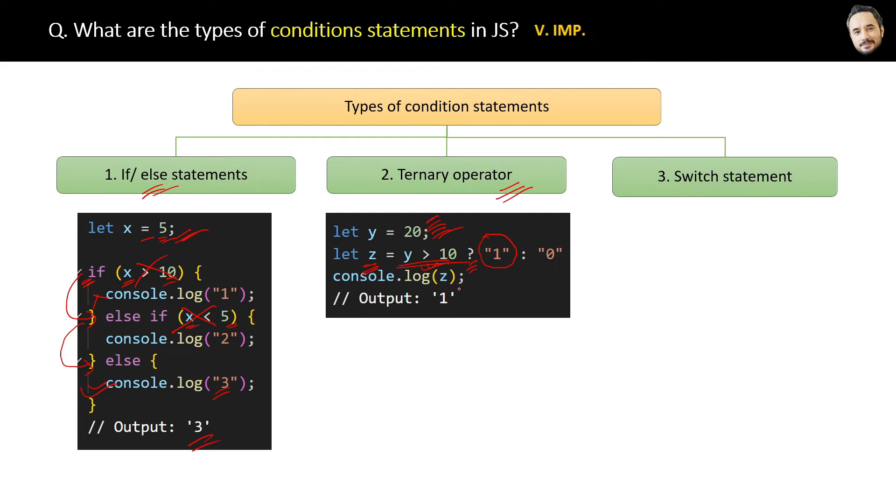Right now it is 1 here. But suppose y is equal to 5, then 5 is greater than 10 will be false. This condition will be false, and in that case, the value next to this colon symbol...